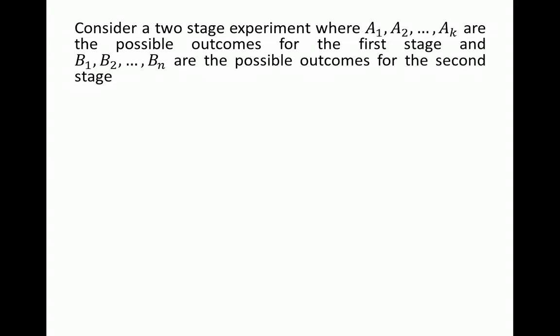Consider a two-stage experiment where in the first stage the possible outcomes are a1, a2, ..., ak. So we have k possible outcomes in the first stage.